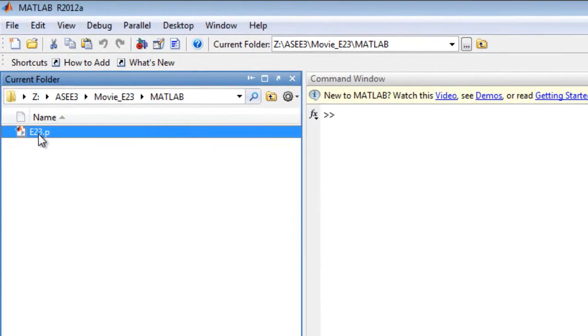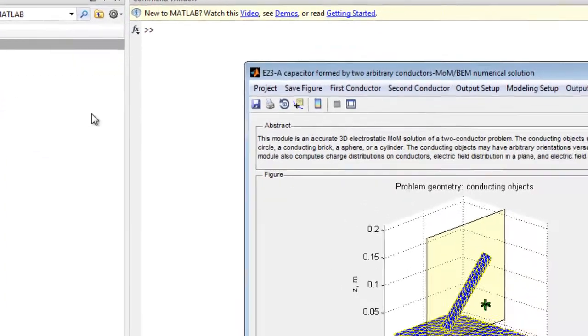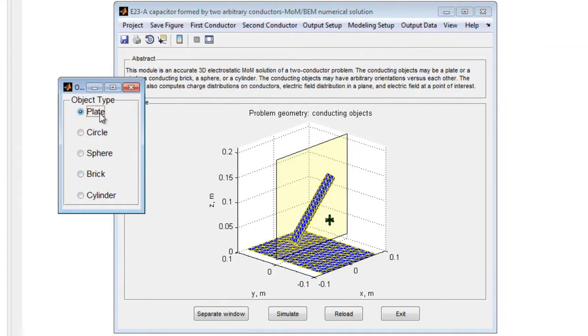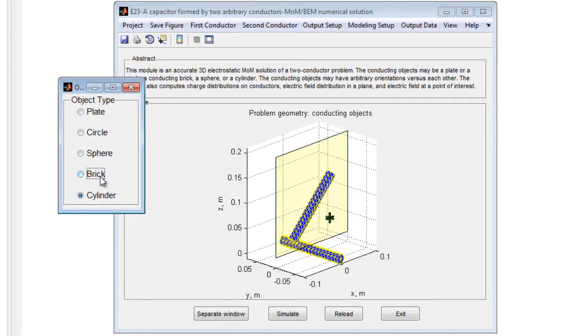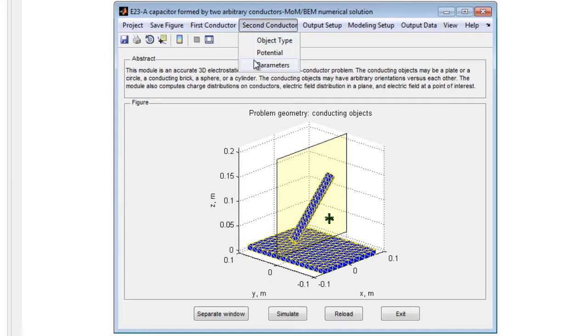run the module in MATLAB, and the default geometry is displayed. The object shape and parameters of the first conductor may be changed using the first conductor menu. The object shape and parameters of the second conductor may be changed using the second conductor menu.